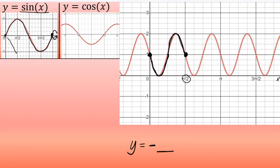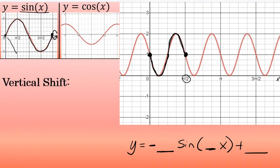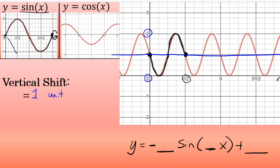So when I write this equation, I'll start with y equals negative, leave space for a value of a, then write sine, leave space for a value of b, and add a value of c at the end. Beginning with the vertical shift: the highest point is 2 units above the x-axis, and the lowest point is 0. Halfway between 0 and 2 is 1, so there's a vertical shift of 1 unit up. The value of c is positive 1, and this equation will have a plus 1 at the end.